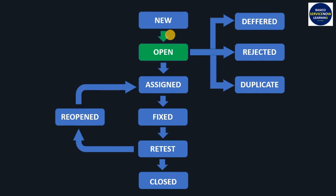The lead will review the bug and decide whether it needs to be fixed or should be marked as deferred, rejected, or duplicate. If they decide the bug is genuine and needs to be fixed, they assign it to a particular developer.